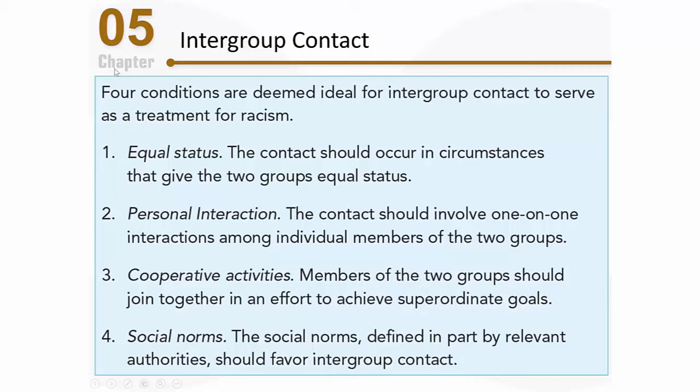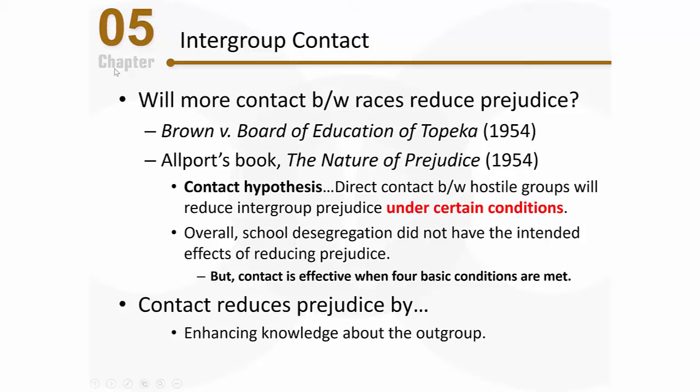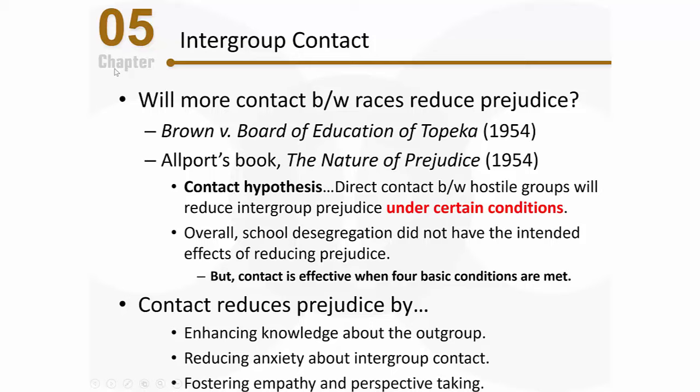How does it work? What's actually going on? Direct contact will reduce prejudice by a variety of factors. One is simply by enhancing knowledge about the outgroup — by having contact with people of another group, they come to know each other better. Once they get to know each other, they no longer have that same anxiety that typically goes along with meeting someone from another group, and their social interactions are no longer as awkward. As they come to know each other better and feel less anxious interacting with one another, they develop a better sense of empathy and perspective-taking. They get to understand how the other group thinks and feels, and they start to see them more as human beings.